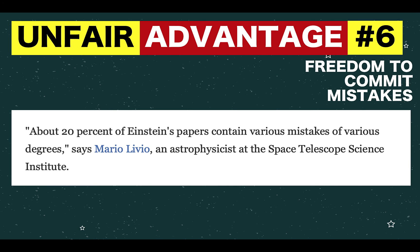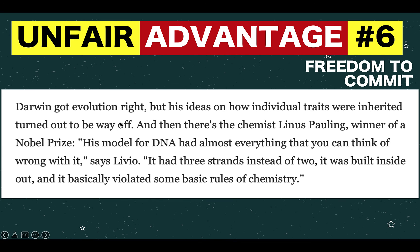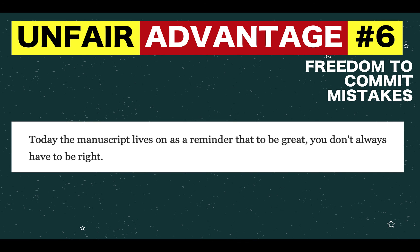Imagine 20% error. And these are not problem sets or homework. These are mathematical publications with a rate of 20% error. And aside from that, Darwin got the evolution right. But his ideas on how individual traits were inherited turned out to be way off. And this manuscript lives as a reminder that to be great, you don't always have to be right.